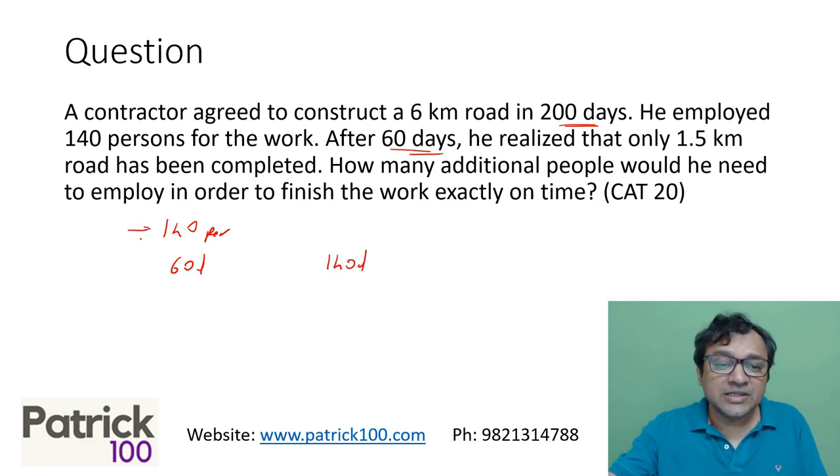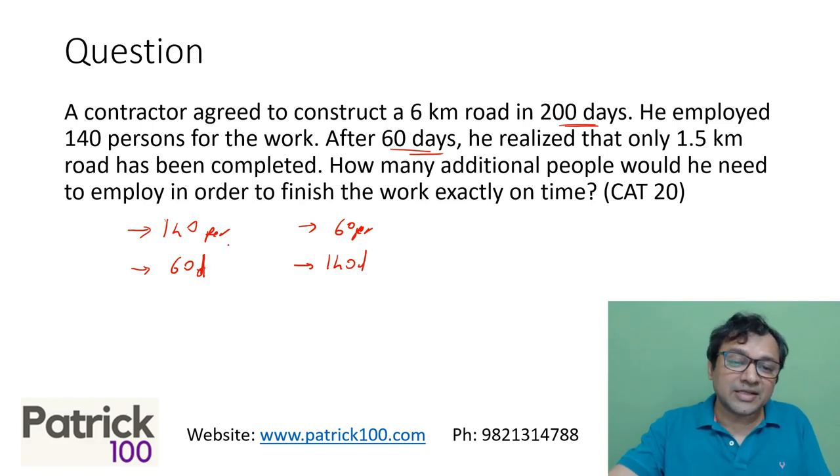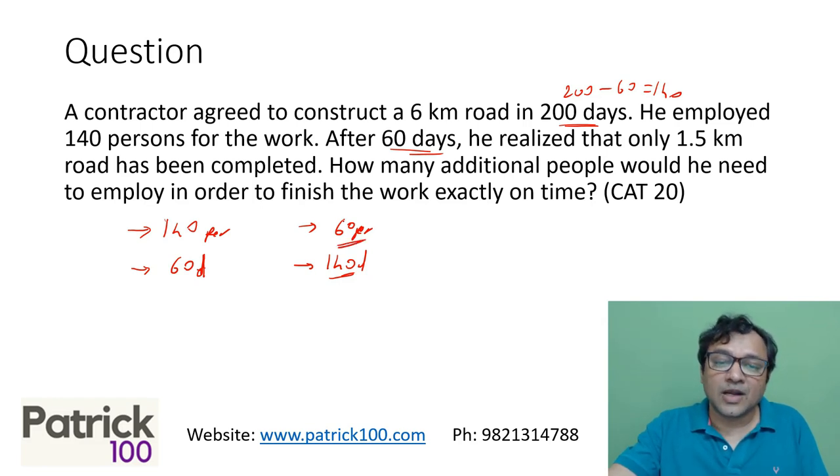So 140 persons can complete a particular work in 60 days. So in 140 days, which you want to complete, 140 is 200 minus 60. In 140 days, if you want to complete, you will require 60 people, because man-days has to be equal.